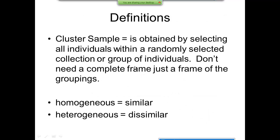Now, our cluster sample. This is obtained by selecting all individuals within a randomly selected collection or group of individuals. Don't need a complete frame, just a frame of the groupings. Cluster is obtained by selecting all individuals within a randomly selected collection or groups of individuals. Well, maybe I go by high school. Maybe there's 10 high schools. And they're already broke into clusters by what high school they're in. And then I randomly select, it's obtained by selecting all individuals within a randomly selected collection. So, I got 10 high schools and I randomly select three of them. Now, after I've selected those three, then I sample everybody in those schools. That's what that's saying.